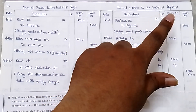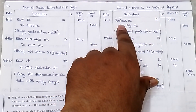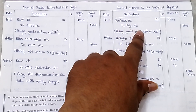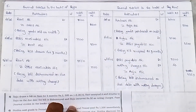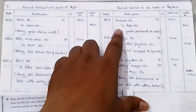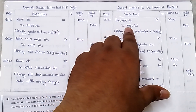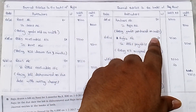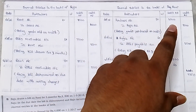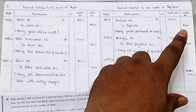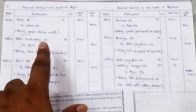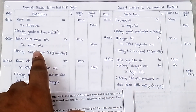In Rani's books, on 1/6/2016, Rani purchased goods from Rajoo. Entry: Purchase account debit to Rajoo account, being goods purchased — amount 2500.